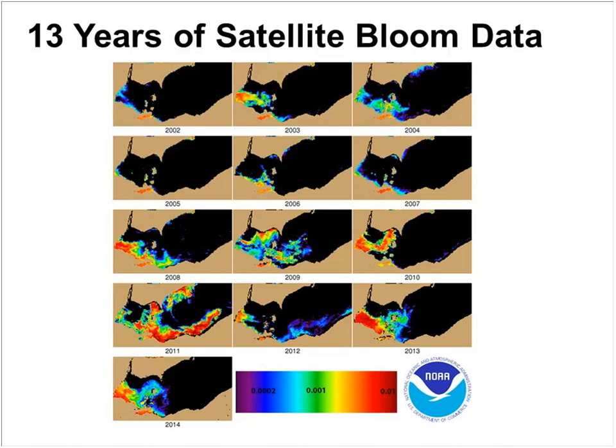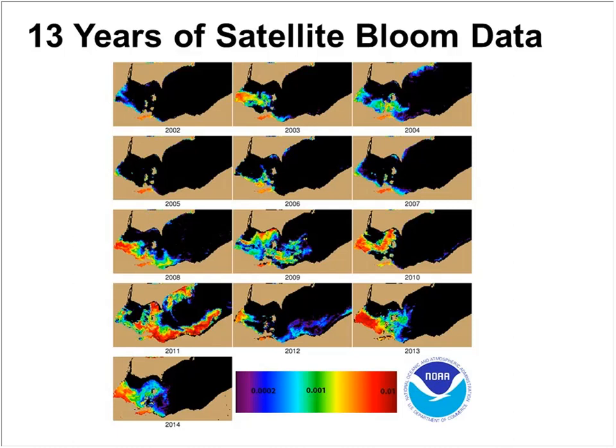Taking a close-up view of 2008, which was a heavy precipitation year, and comparing it to 2011, one of our worst blooms on record, and 2012, one of our smaller blooms on record. What I want you to recognize is how this is driven by spring rains. In 2008, discharge was 8 billion cubic meters. In 2011, the worst bloom on record, and 2012, a weak bloom, those only had about 6.2 and 6.1 billion cubic meters of annual discharge. The big difference is spring discharge: in 2011 it was 5 billion cubic meters, but in 2012 it was only 1 billion cubic meters in the spring.